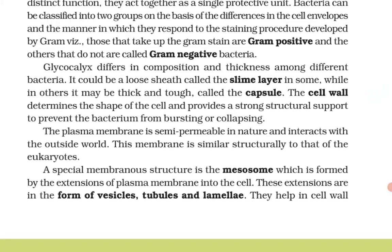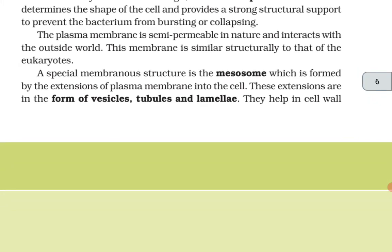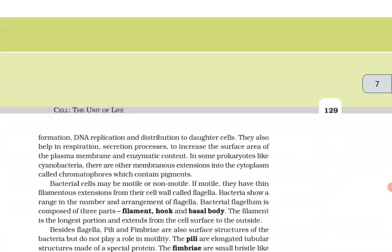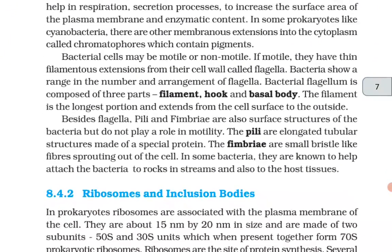A special membranous structure is the mesosome, which is formed by extensions of the plasma membrane into the cell. These extensions are in the form of vesicles, tubules, and lamellae. They help in cell wall formation, DNA replication, and distribution to daughter cells. They also help in respiration, secretion processes, and to increase the surface area of the plasma membrane and enzymatic content. In some prokaryotes like cyanobacteria, there are other membranous extensions into the cytoplasm called chromatophores, which contain pigments.